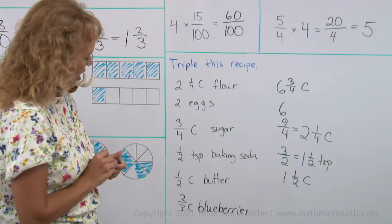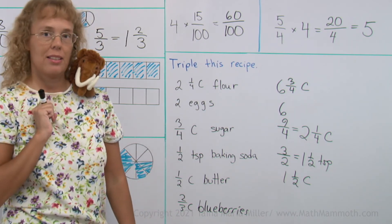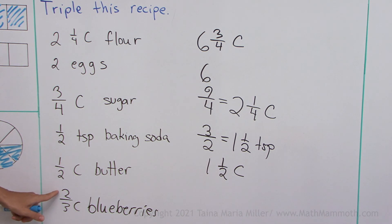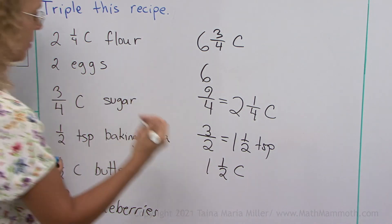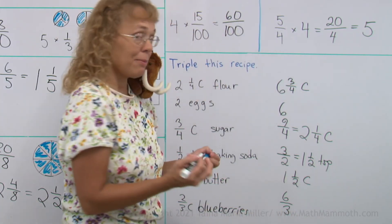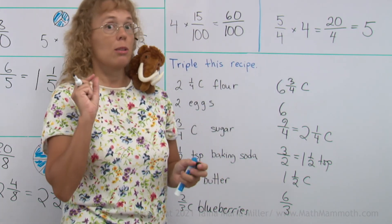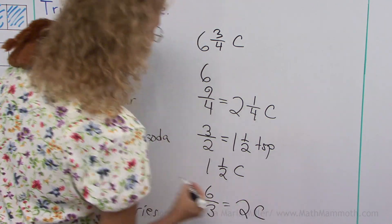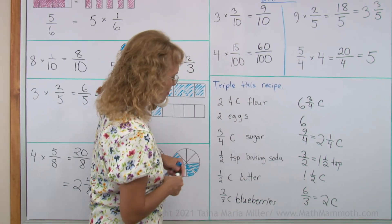And lastly, the blueberries. 2 thirds of a cup times 3. Okay. We get 3 times 2 is 6, 6 thirds. And that is what? As a mixed number? Actually, it's gonna be a whole number. 6 divided by 3 is exactly 2. So 2 cups of blueberries goes into the triple recipe.